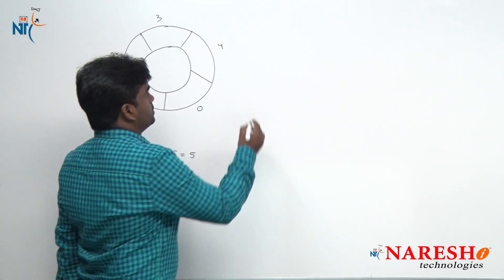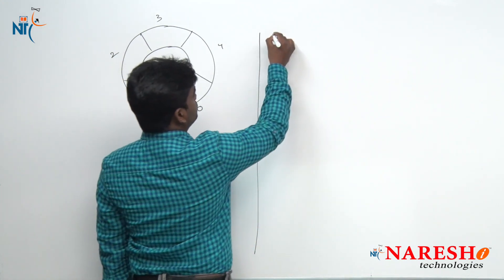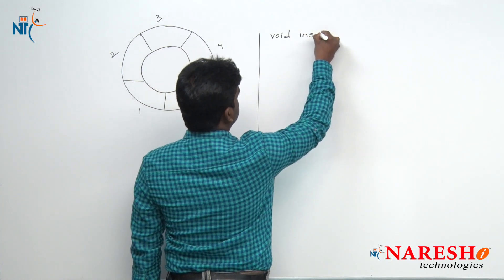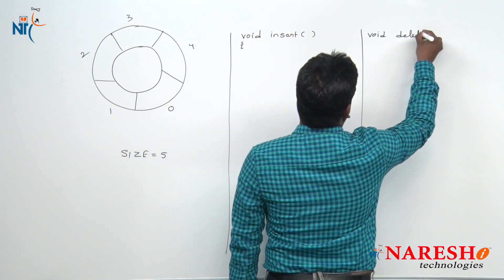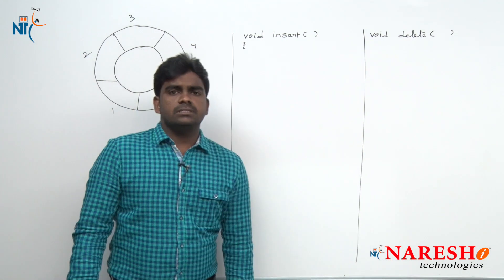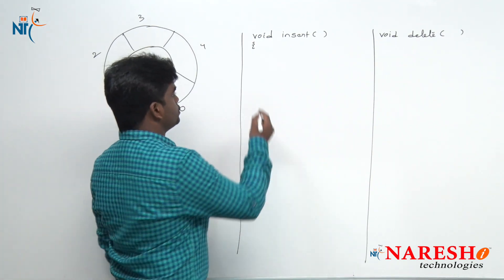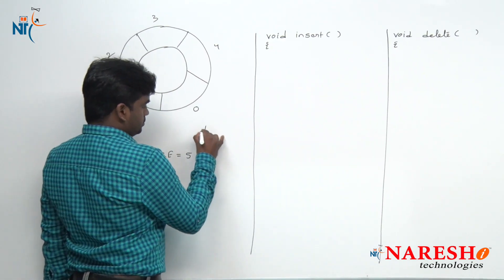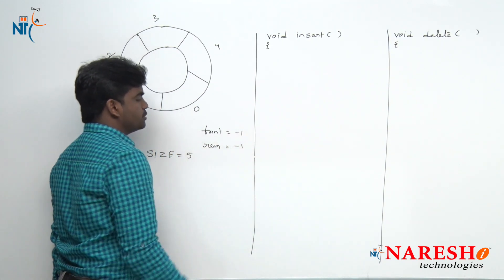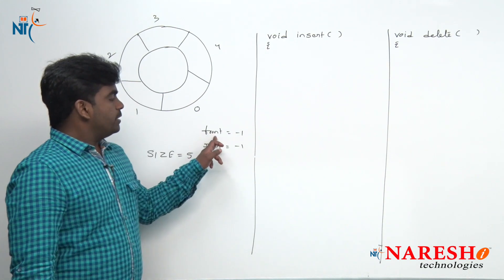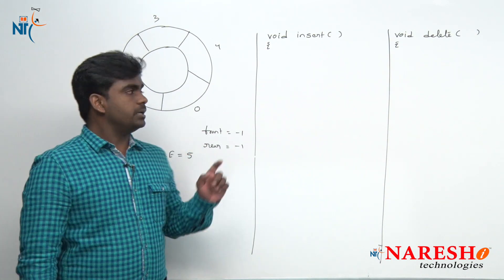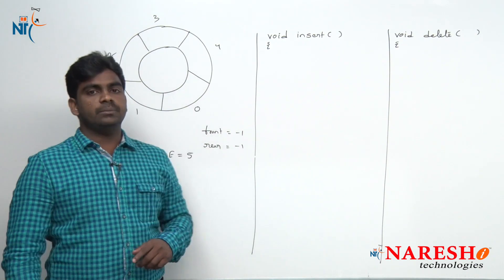Now the operations we are performing: first one is insert element, second one is how to delete element, and finally we will see display. Initially front and rear are both pointing to minus 1, and whenever front and rear equal minus 1, that represents the queue is empty — no elements in the list.